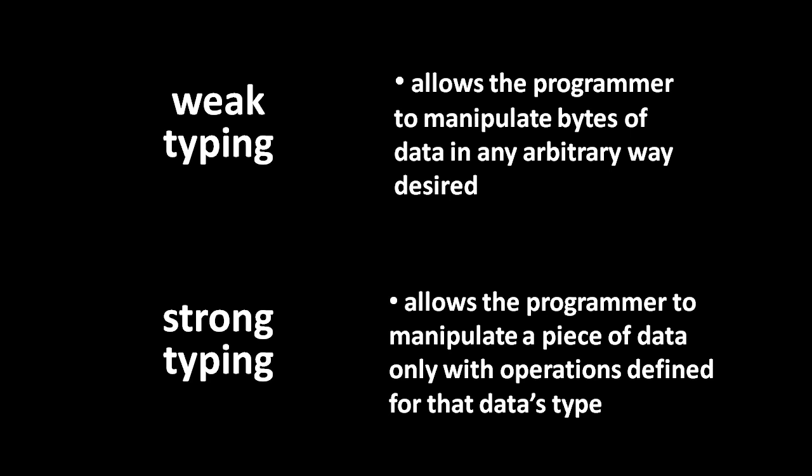For example, in assembly languages, which are the primary examples of weakly typed languages, it's possible to take, say, a string in memory and multiply all the bytes together of that string. Or, say, we can modify the string by flipping the third bit of every byte.